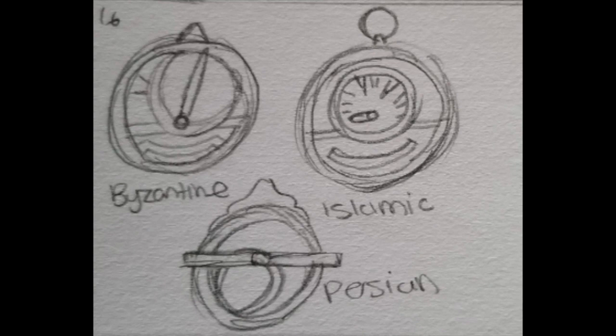The result of this spread was many unique versions of an astrolabe that were developed to fit the geographic location where it was being used. This was because different stars are visible from different places.